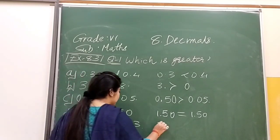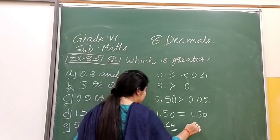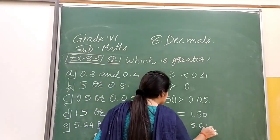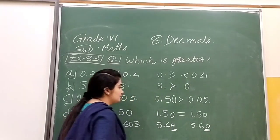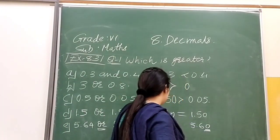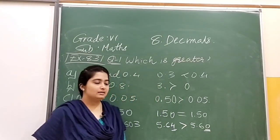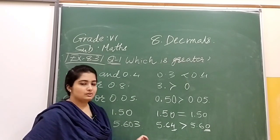In the hundredths place we will compare them. Here we have 4, and here what do we have? In the hundredths place we have 0. So which number is greater, 4 or 0? That will be 4. So 5.64 is greater, that will be greater than 5.603.